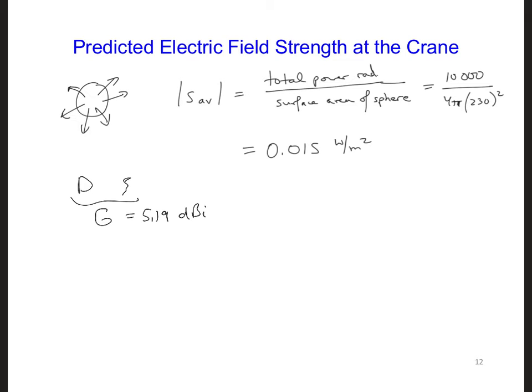Since that assumes we have azimuthal symmetry in the radiation pattern, let's increase this by a factor of 2. This is because more power is directed towards the crane. So we are assuming twice as much power is directed towards the construction site compared to the azimuthally symmetric antenna.